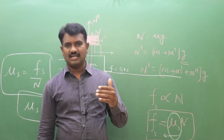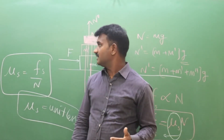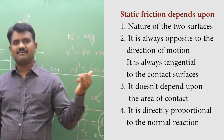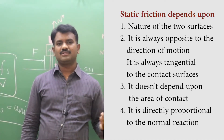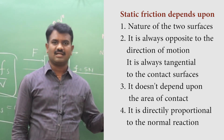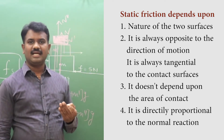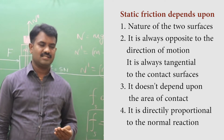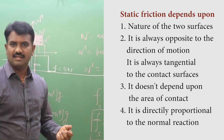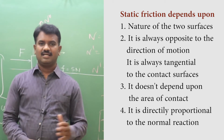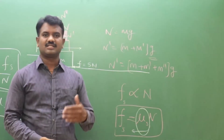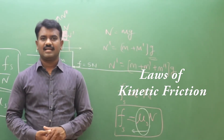Let us conclude the laws of static friction: first, friction depends upon the nature of the surfaces; second, it is always opposite to the direction of motion and tangential to the contact surface; third, it does not depend upon the area of contact; and fourth, static friction is directly proportional to the normal reaction.